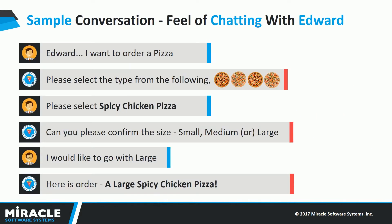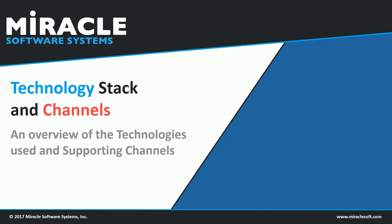Let me show you an example. When a user says "I want to order a pizza," EDWORD responds with a list of pizzas to choose from. If the user selects a pizza, EDWORD will confirm the size and place the order. Simple, isn't it? Now let's understand how EDWORD is able to do all this.